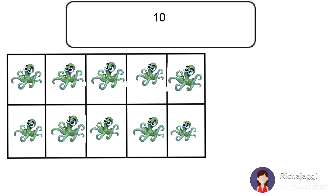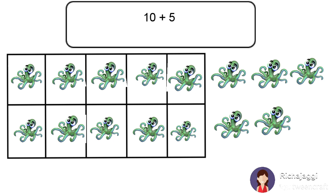There are 10 octopus in this 10's box, and 5 octopus outside the box. So how many octopus in all? To find out the total number of octopus, we will count all of them.